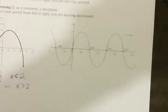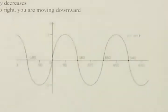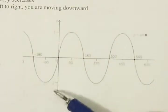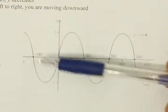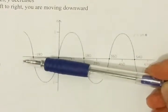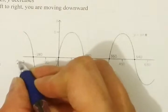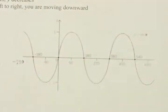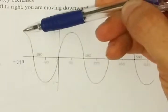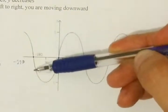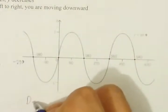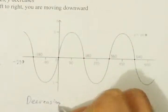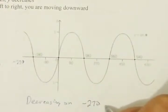Here is a sine wave. You know sine waves — you did these last year. You've got your x-axis in degrees and your y-axis from negative 1 to positive 1. This graph starts at negative 270 on the x-axis. Starting here and moving left to right, I'm going down until I get here. So my function is decreasing on the interval negative 270 all the way up to negative 90.